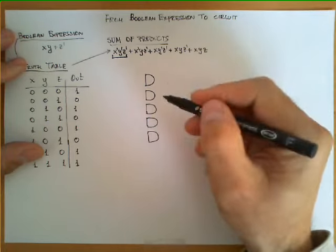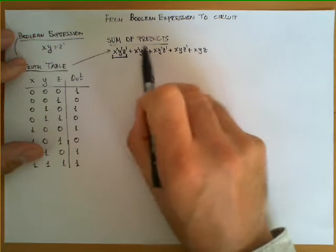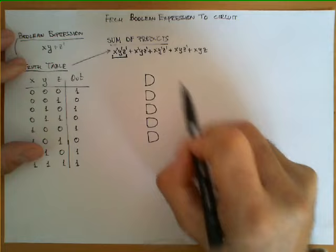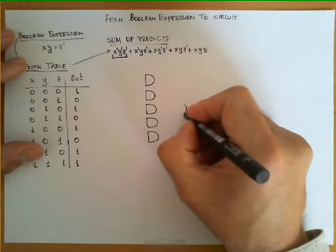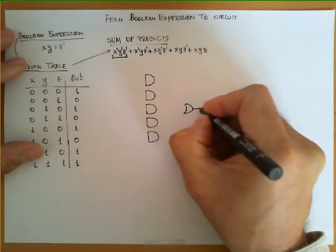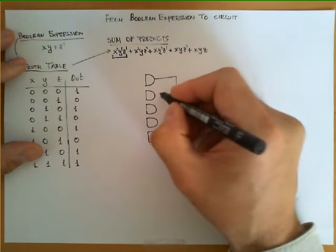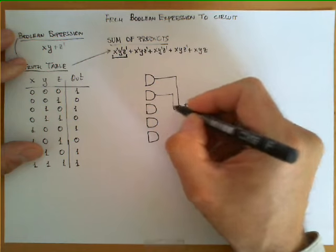Each one of these will implement the conjunction or the product of this sum of products. And then at the end what we are going to do is the result of each one of these gates will be fed as an input in an OR gate.